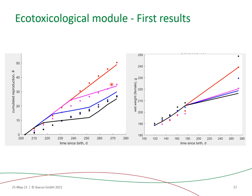The left plot presents the cumulative reproduction as a function of time since birth, and the right one shows the body weight of females as a function of time since birth. The red data and model lines are the control data, then going into increasing concentration levels. As we can see, the level of effect on the reproduction is well predicted, with however a slight delay in the onset of the effect. An effect on growth is also predicted, which is not fully on par with the data, which can be explained by discrepancy in the feeding data.